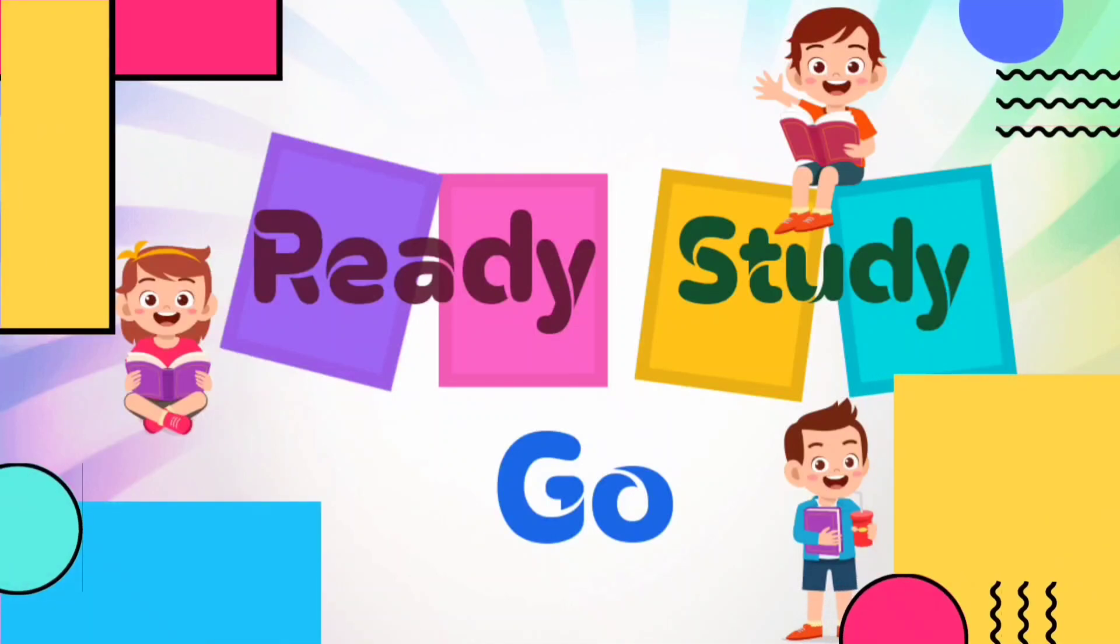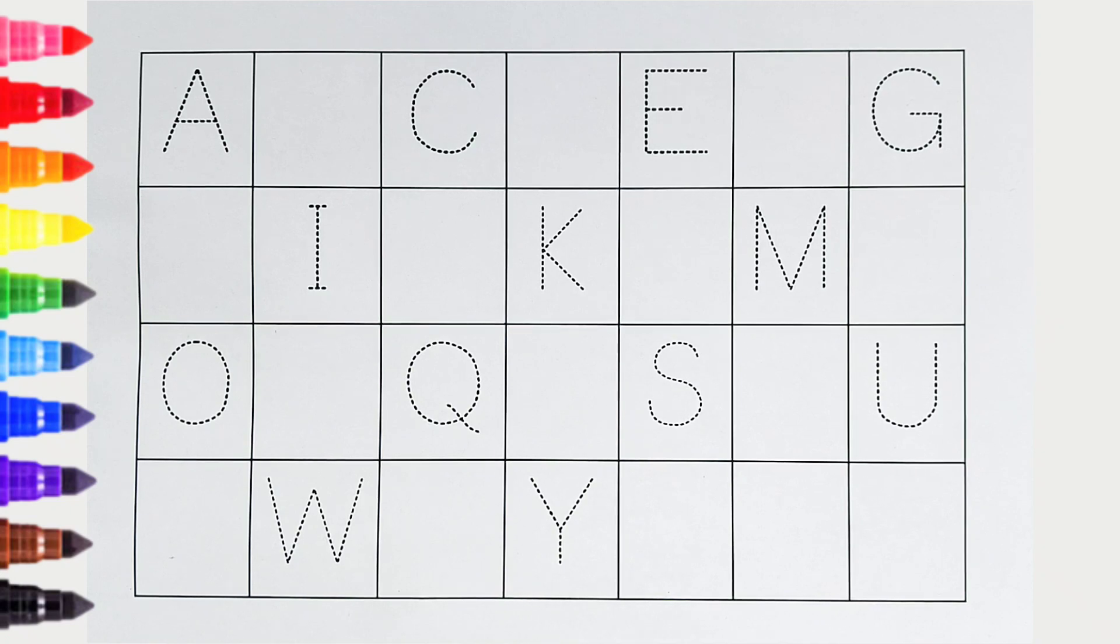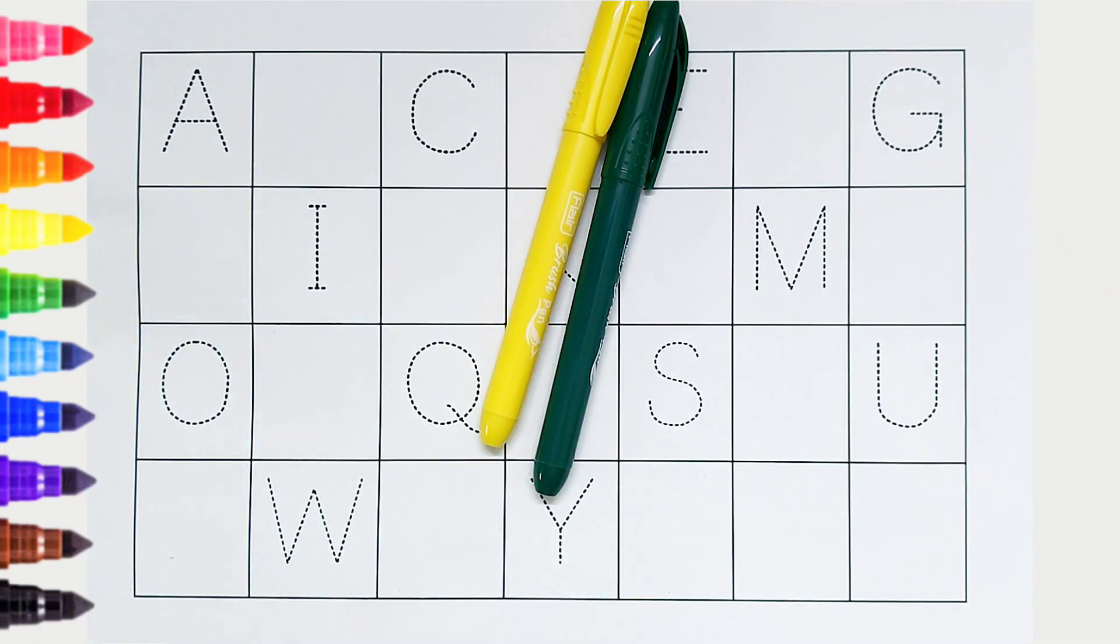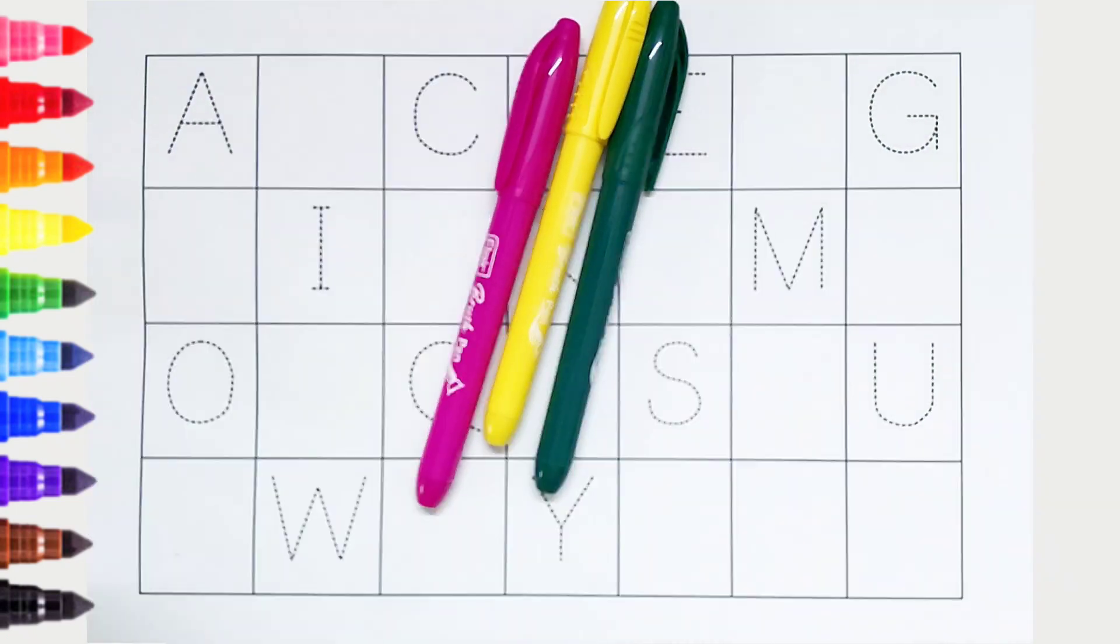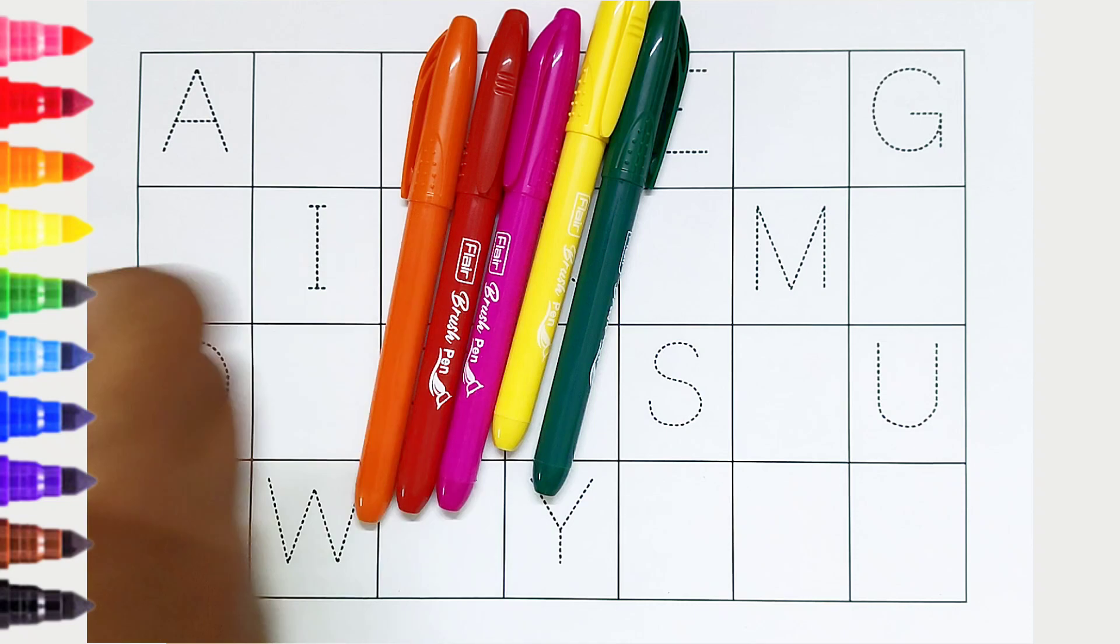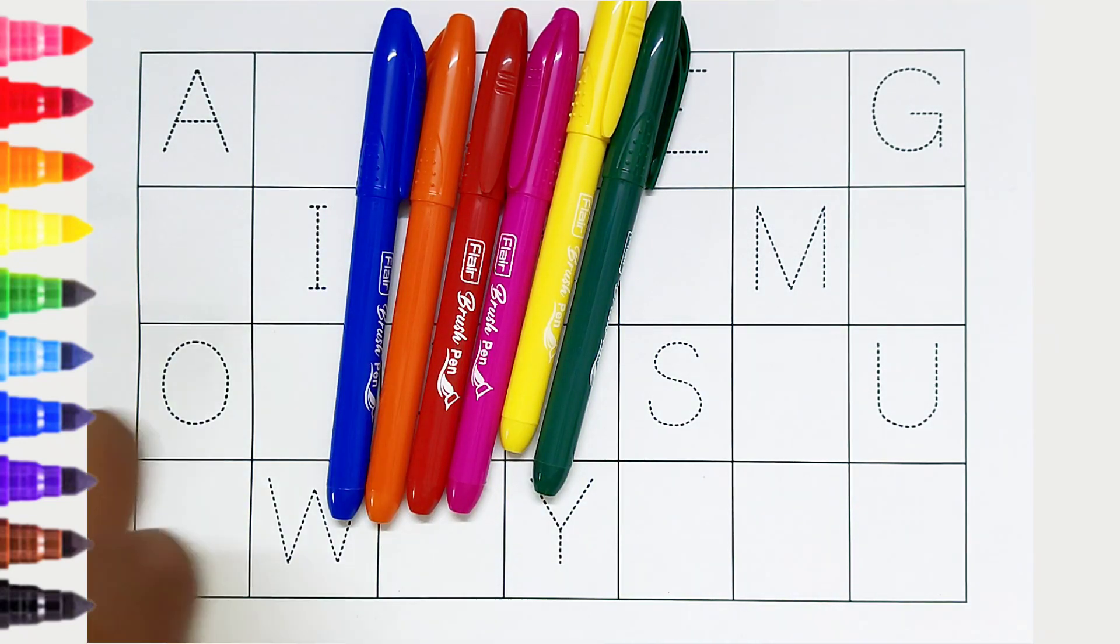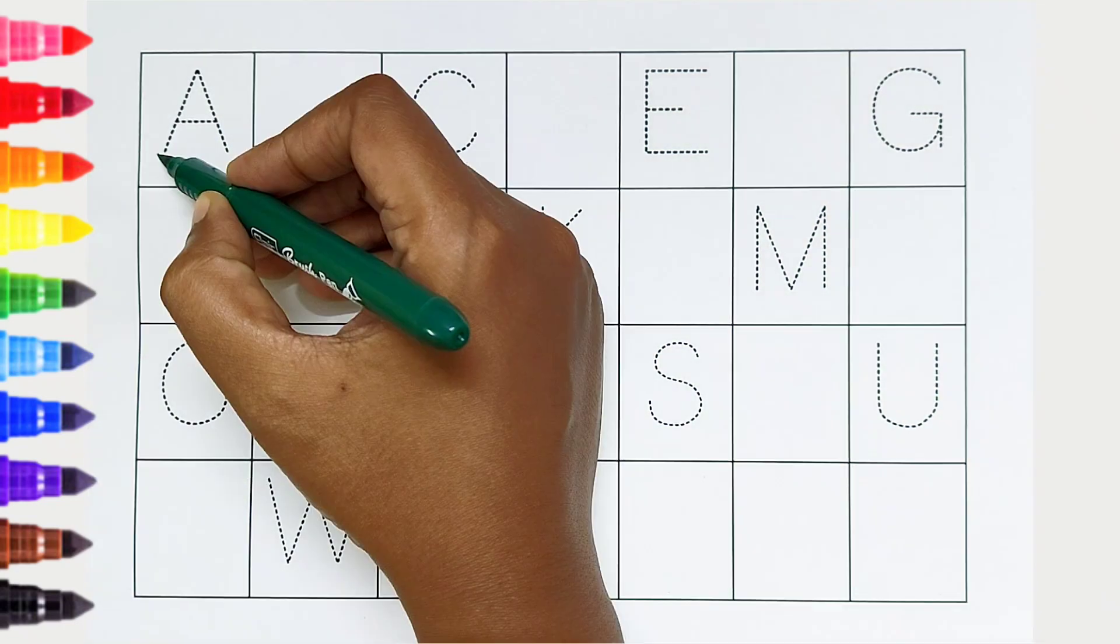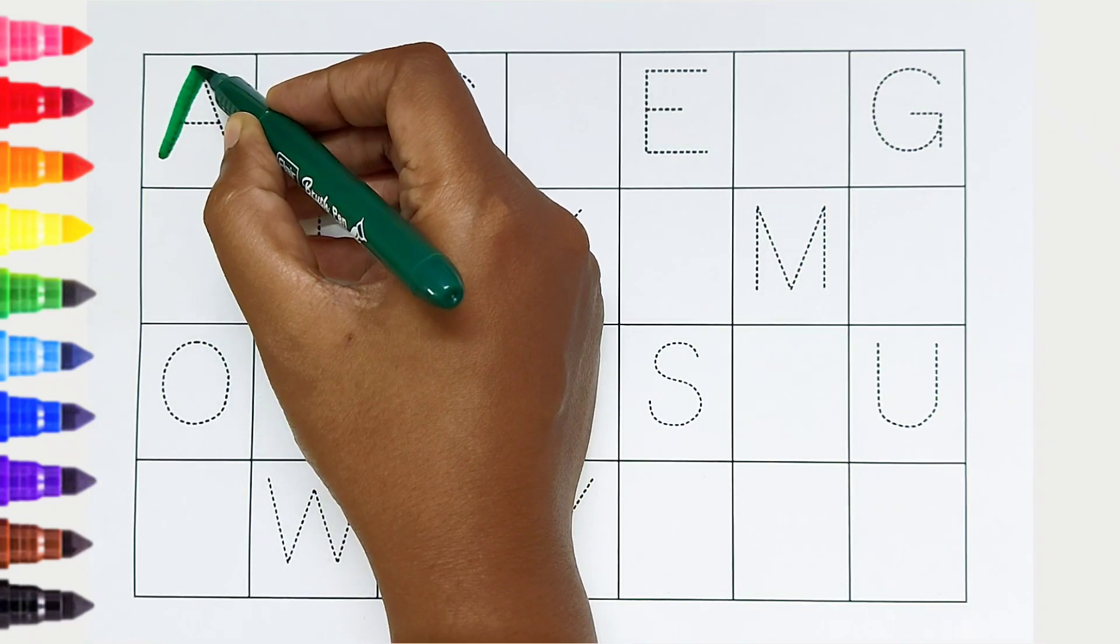Ready, study, go! Green color, yellow color, pink color, red color, orange color, blue color, black color. Hi kids, today we can learn the alphabets from A to Z.